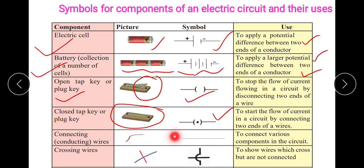Connecting wires — you must have seen the blue wire, the red wire, the black wires. The people who come home to repair our circuitry bring such wires. But actually, it is represented as a straight line when used symbolically in the electric circuit diagram to connect various components in the circuit.